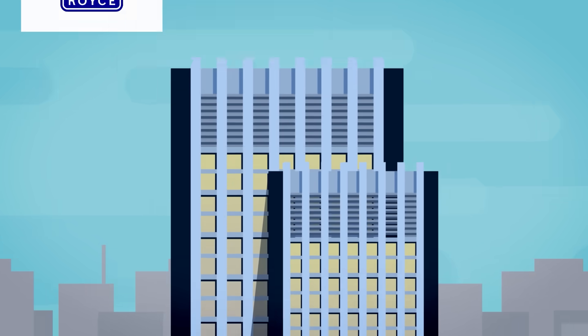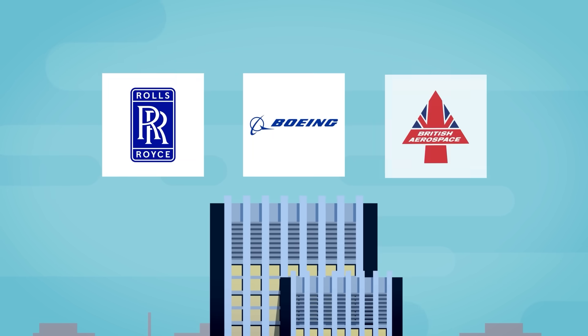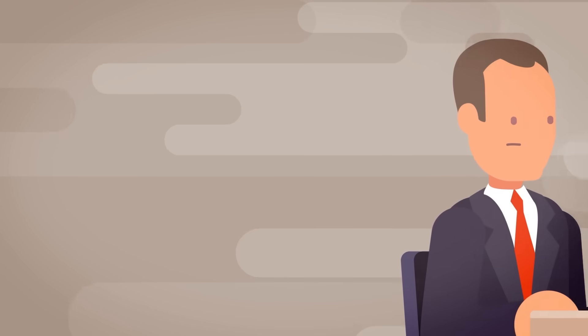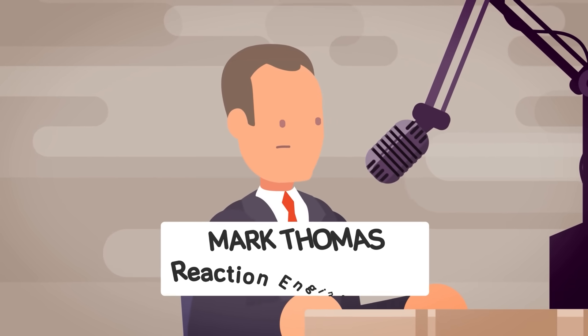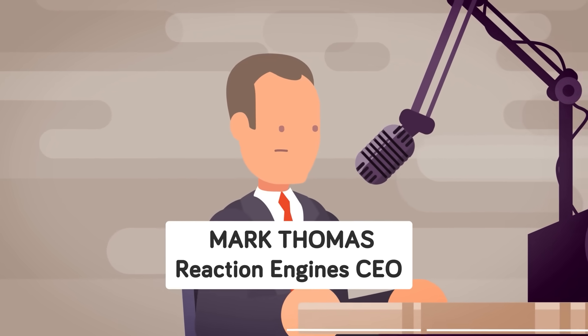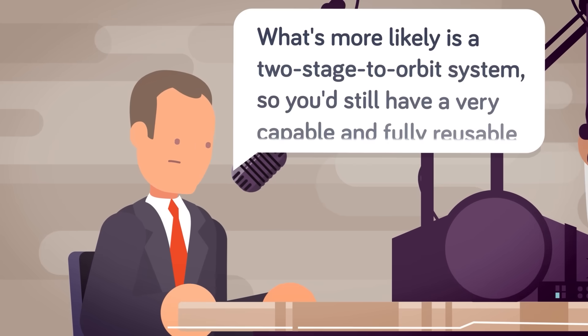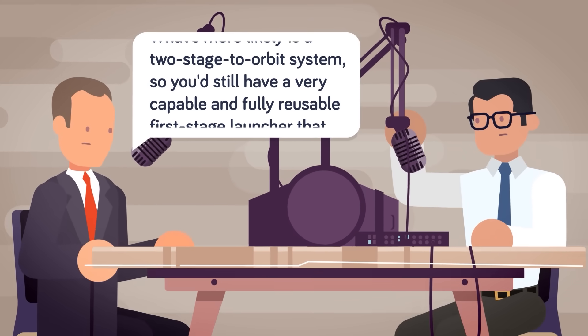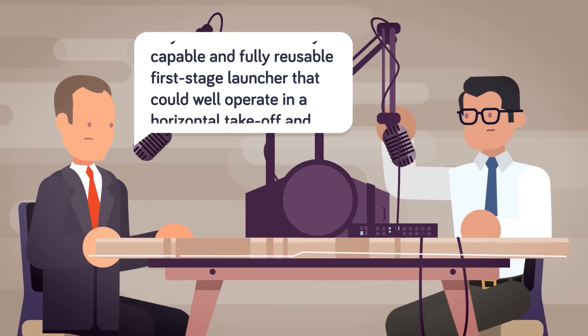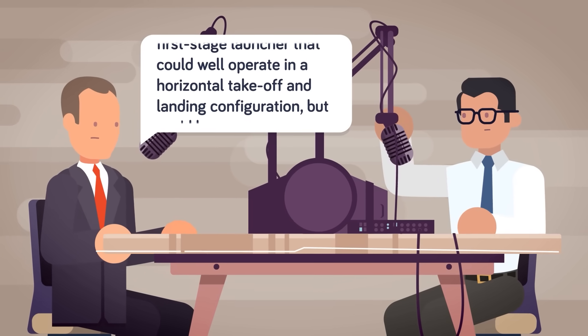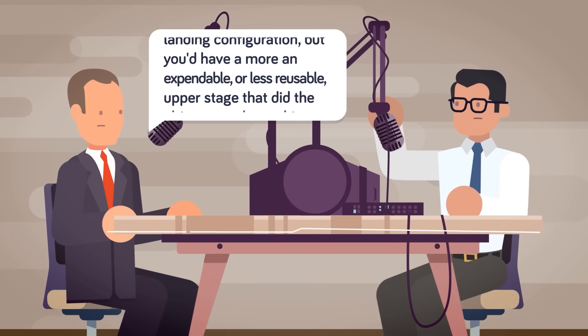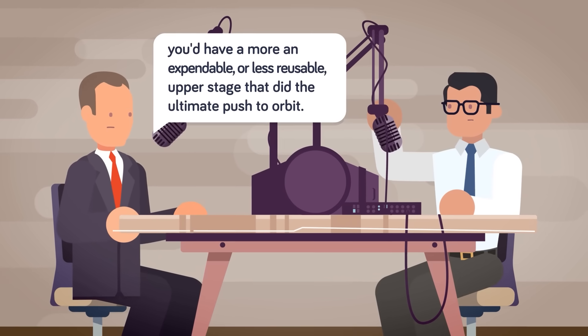There are some pretty impressive names attached to the project, such as Rolls-Royce, Boeing, and British Aerospace. So when can we expect to see Skylon in action? In April of this year, Reaction Engine CEO Mark Thomas spoke out about the project on the Aviation Extended podcast, saying what's more likely is a two-stage-to-orbit system, so you'd still have a very capable and fully reusable first-stage launcher that could well operate in a horizontal takeoff and landing configuration, but you'd have a much more expendable or less reusable upper stage that did the ultimate push to orbit.